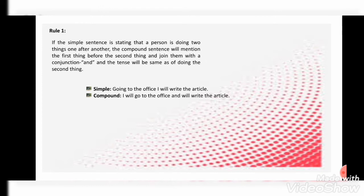The rule states that the compound sentence will mention the first thing before the second thing and join them with the conjunction 'and.' So the compound form becomes: 'I will go to the office and will write the article.' Here 'and' is the conjunction joining the two clauses.